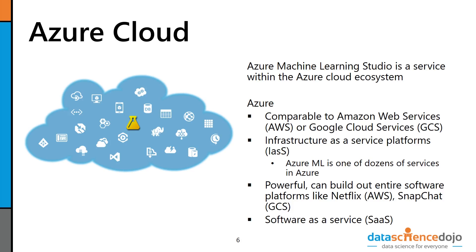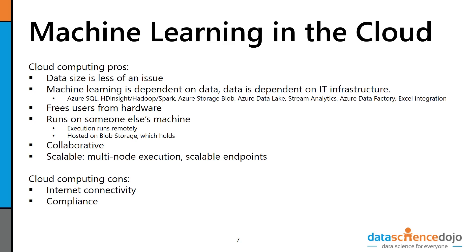Azure Machine Learning is a cloud-based tool that only exists in the cloud — specifically on the Azure stack, Microsoft's cloud platform. Azure is comparable to other cloud services like Amazon Web Services and Google Cloud Services, all of which are infrastructure as a service. They can host robust IT services capable of building entire software platforms like Netflix or Snapchat. These cloud services operate as software as a service, charging you by usage — like an electric bill or a subscription cable bill.